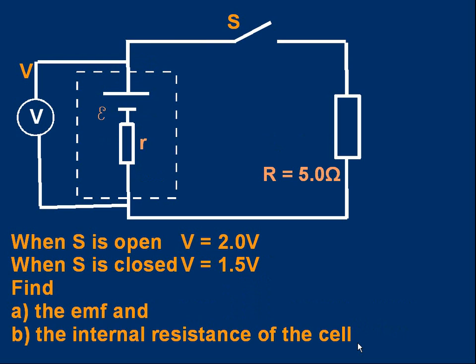Let's try another one. This is more like an exam question. Here we've got a circuit with a switch at the top and the switch S is open. Resistor 5 ohms, and we're told when the switch is open the voltmeter reading the terminal PD is 2.0 volts but when the switch is closed the voltmeter reading drops to 1.5 volts. And you've got to find the emf and the internal resistance of the cell.